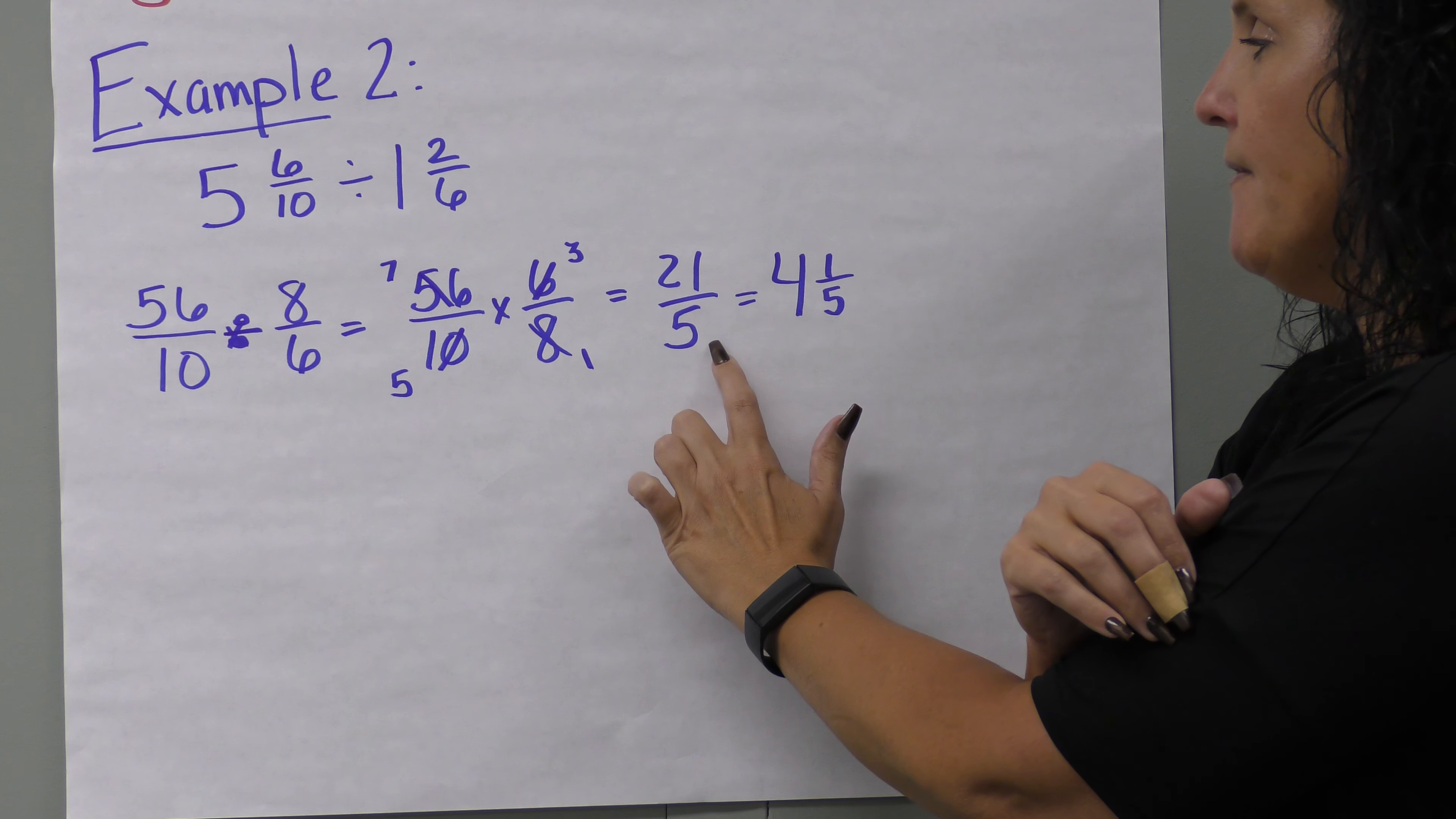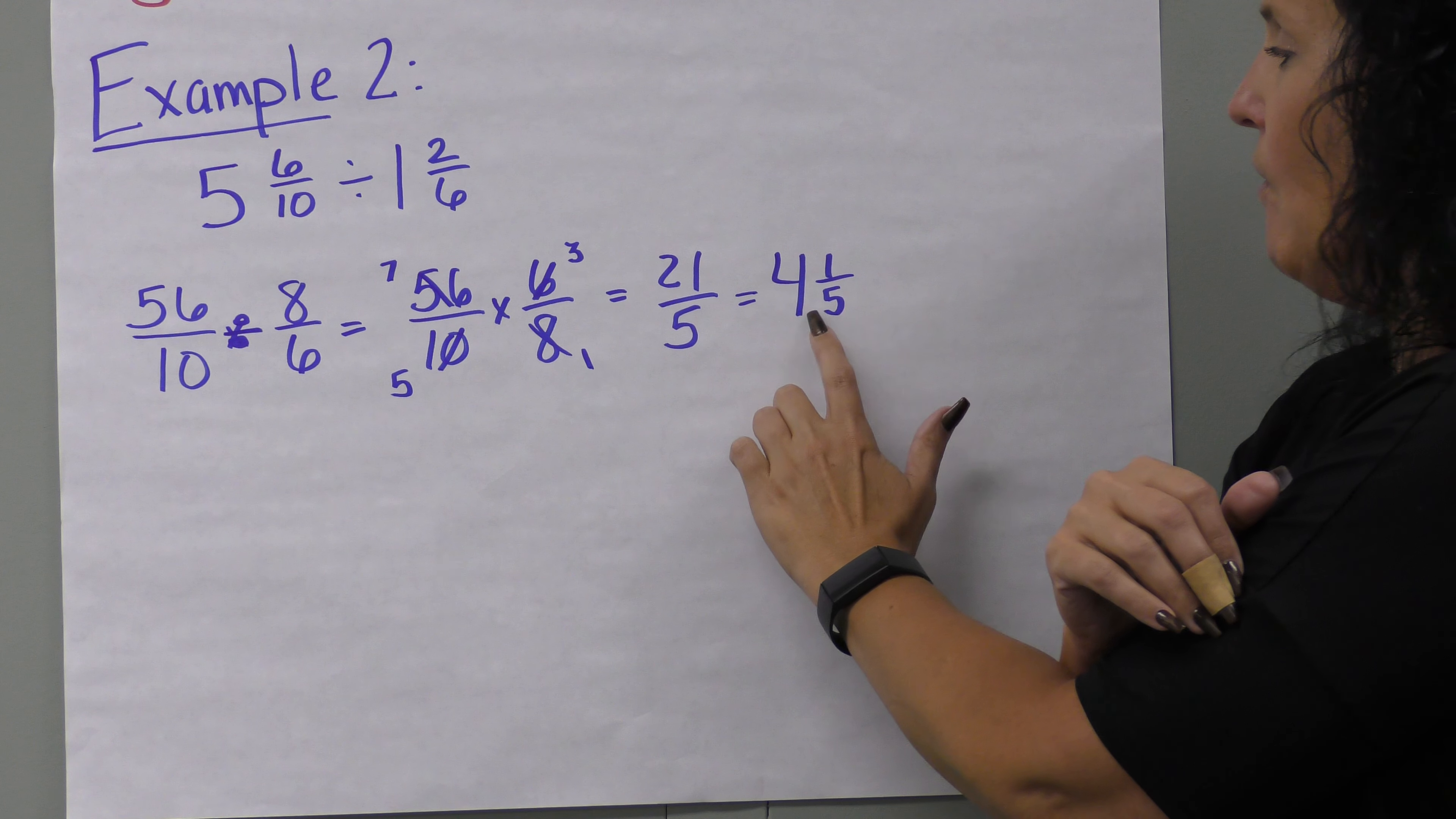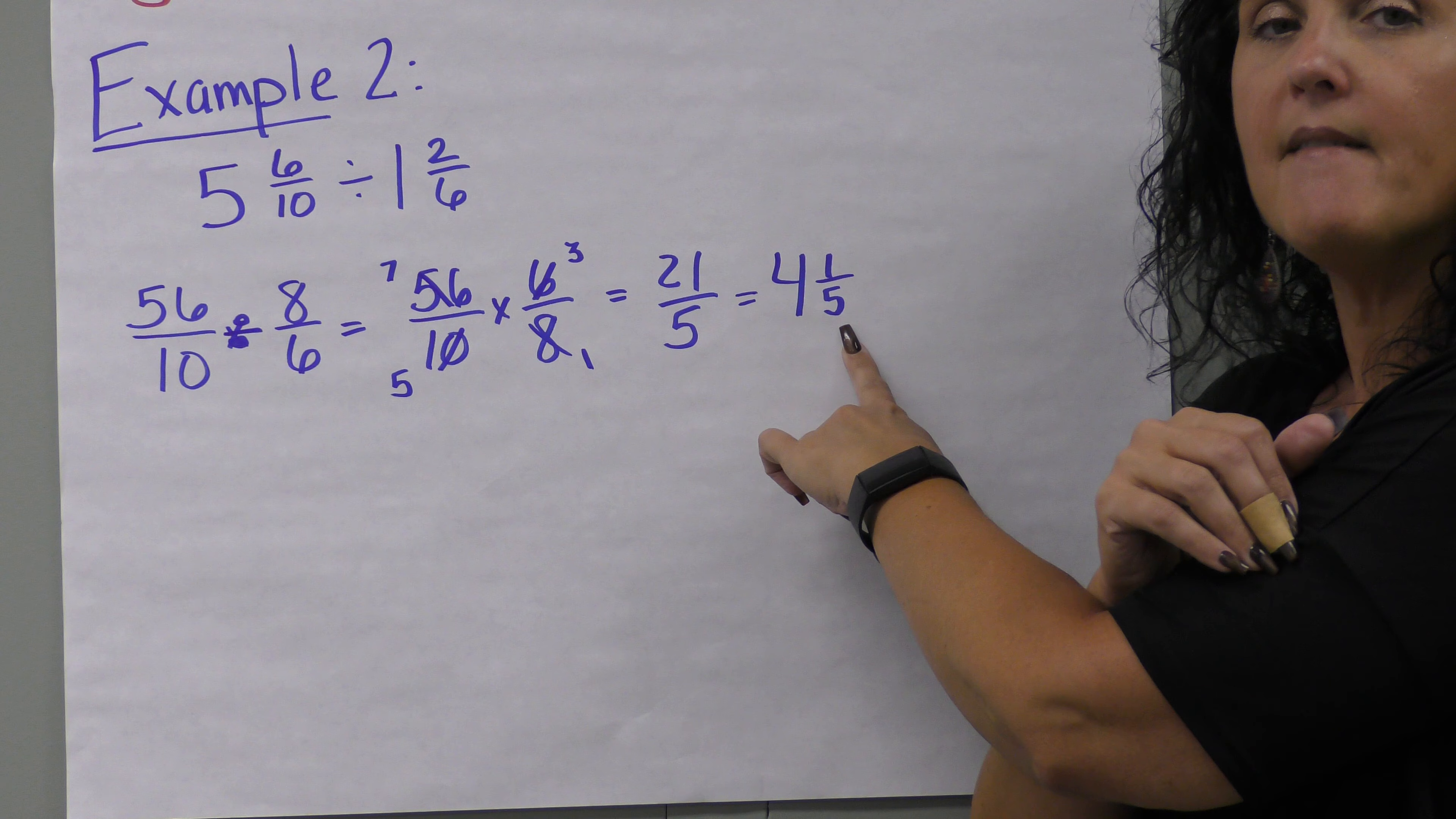Now multiply: seven times three is twenty-one, five times one is five. We have twenty-one fifths. Five goes into twenty-one four times with a remainder of one. Our final answer is four and one-fifth.